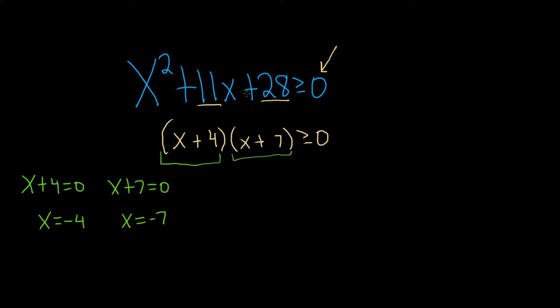So recap. First, factor if needed. So in this case, we factor it. Make sure you have 0 here. Next step, take each piece, set it equal to 0, solve for x. Next step, put these on a number line.